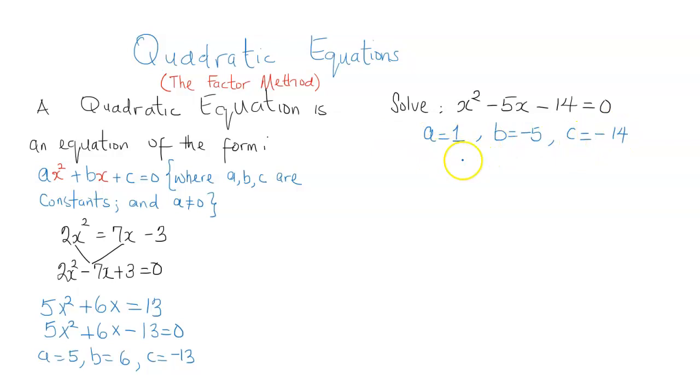So the first step to using the factor method is the extraction of a, b, and c. The second step is going to be to obtain the product of a and c. So that's 1 times negative 14, that's negative 14.